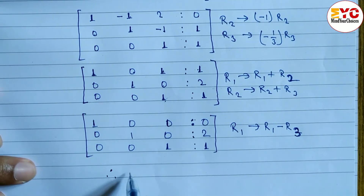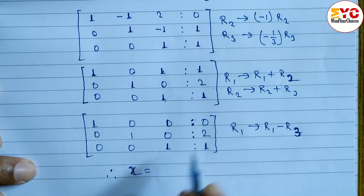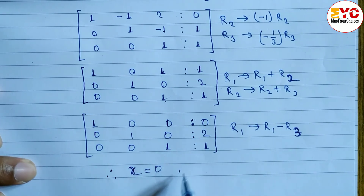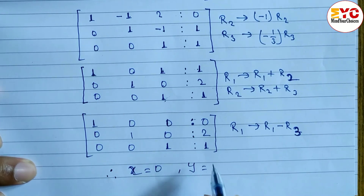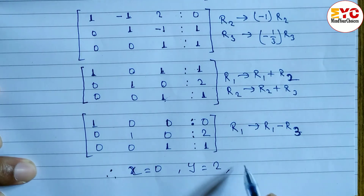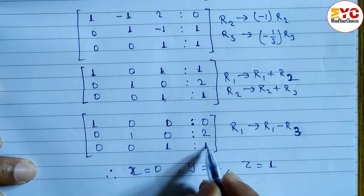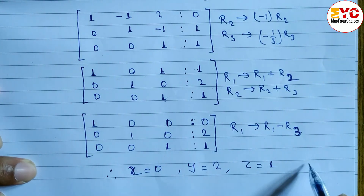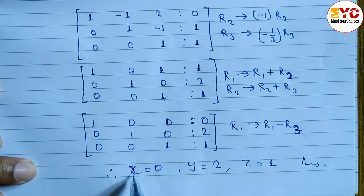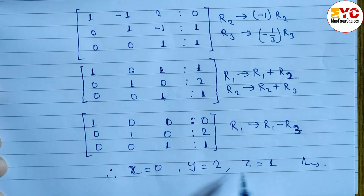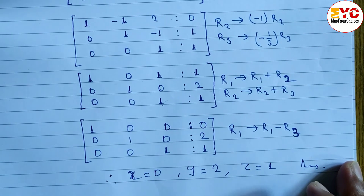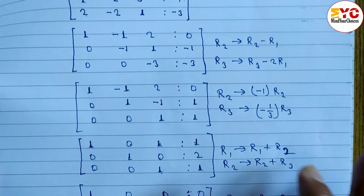Therefore, reading off the values: x is equal to 0, y is equal to 2, and z is equal to 1. This is our final answer.